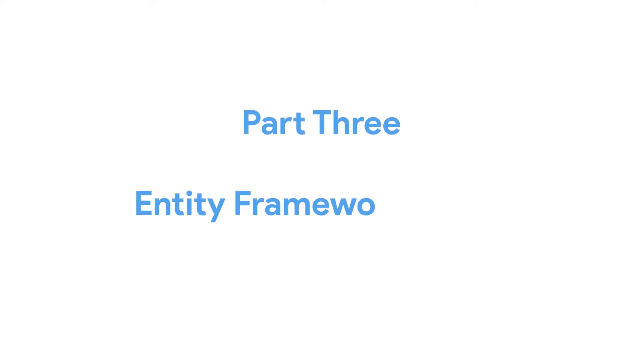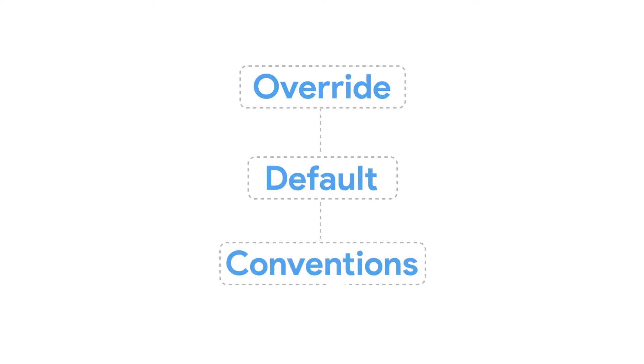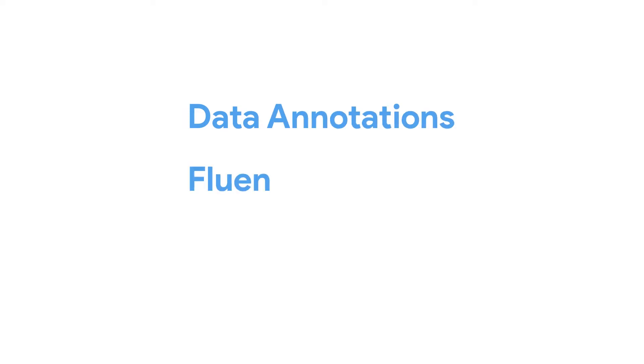Welcome to part 3 of the Entity Framework series. In this video, we're going to take a look at how we can override the default conversions that Entity Framework uses to configure the database and object mapping. We're going to look at two main concepts: data annotations and the Fluent API. With that being said, let's go to Visual Studio and get to the coding.